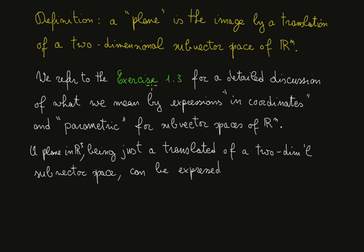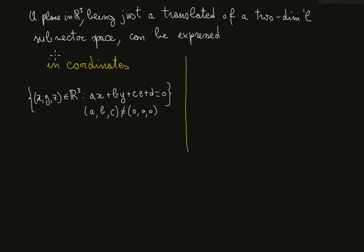We refer to exercise 1.3 for a detailed discussion of what we mean by expression in coordinates and parametric for subvector spaces of R^n. A plane in R³ can be thus expressed in coordinates, which is an expression in which we list all the vectors or the points belonging to the plane. It is something like x, y, z in R³ such that ax + by + cz + d equals zero, for a, b, c different from the zero vector.